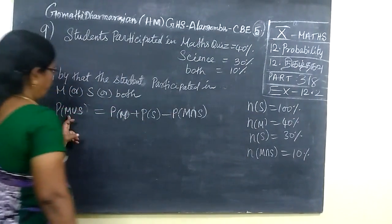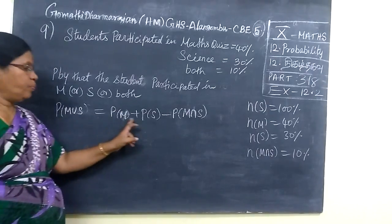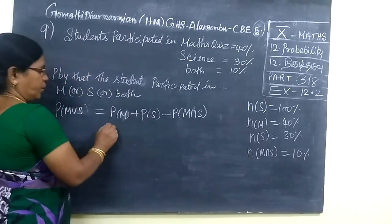P(M), M for math, S for science. P(M) + P(S) - P(M ∩ S).